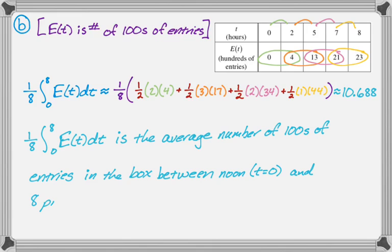So we're trying to interpret it in the context of the problem. So saying between t equals zero and t equals eight, probably not good enough. What we want to do is we want to connect it, right? So t equals zero is noon, t equals eight is actually 8 p.m. Okay, so let's move on to the next part.